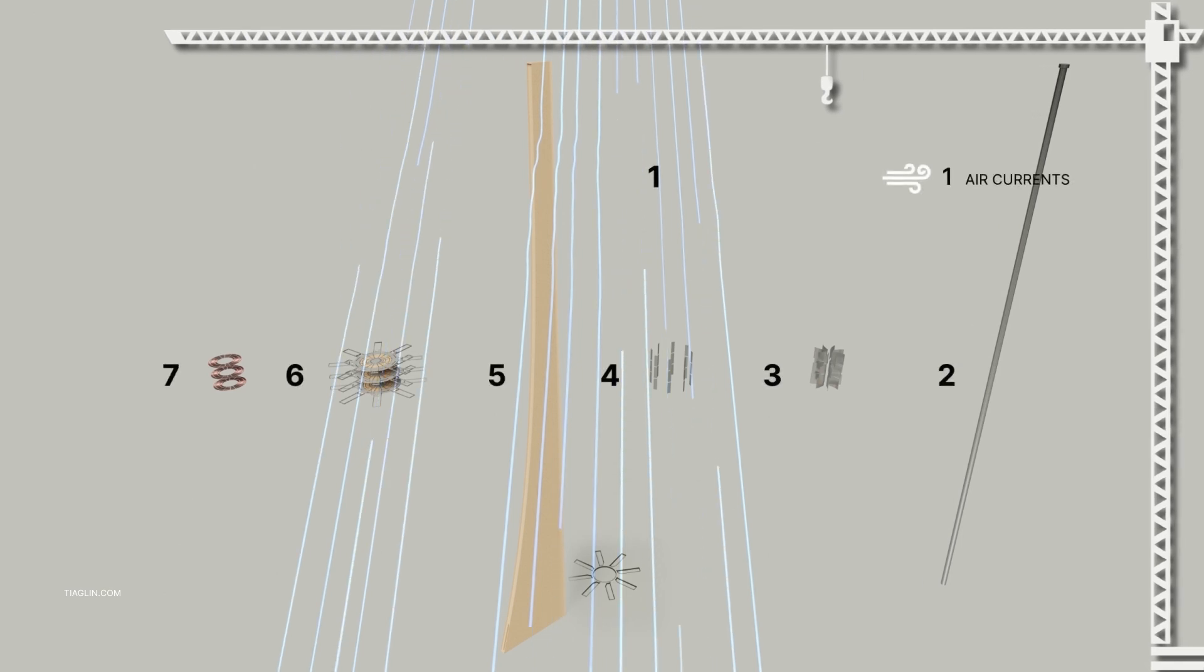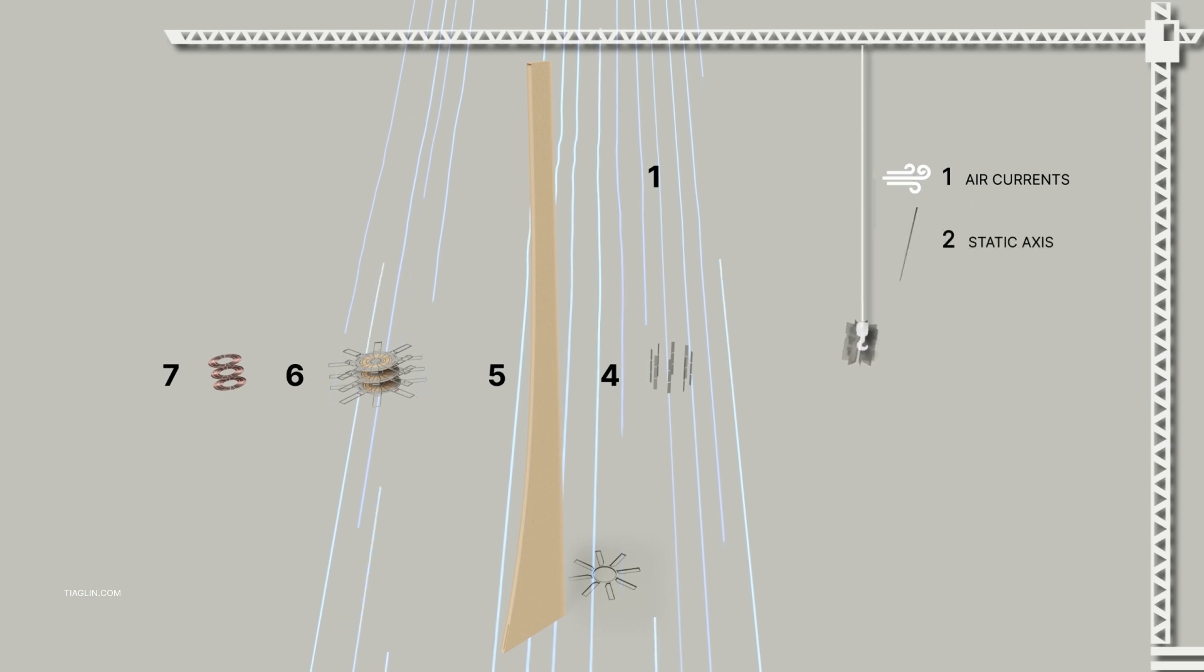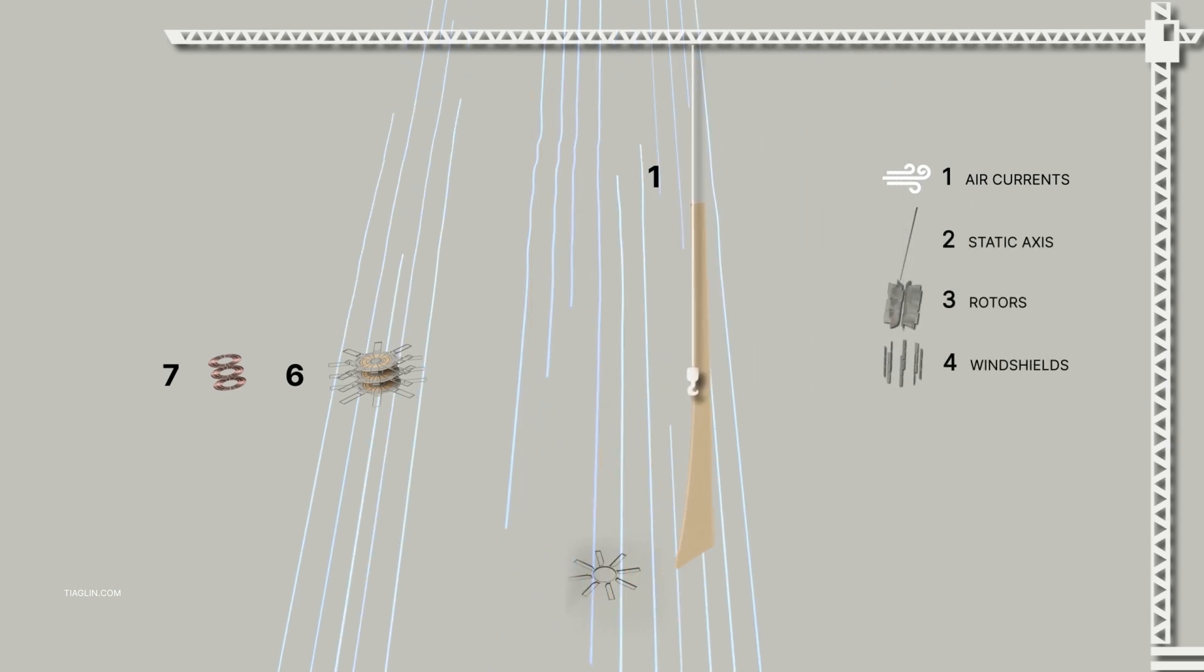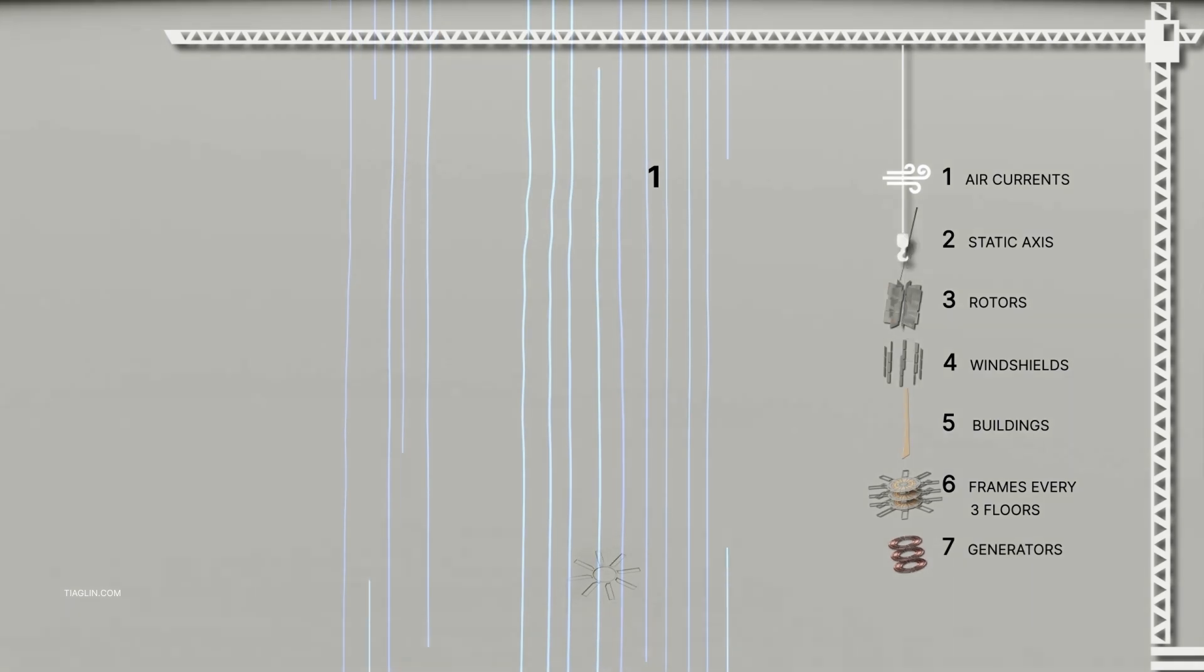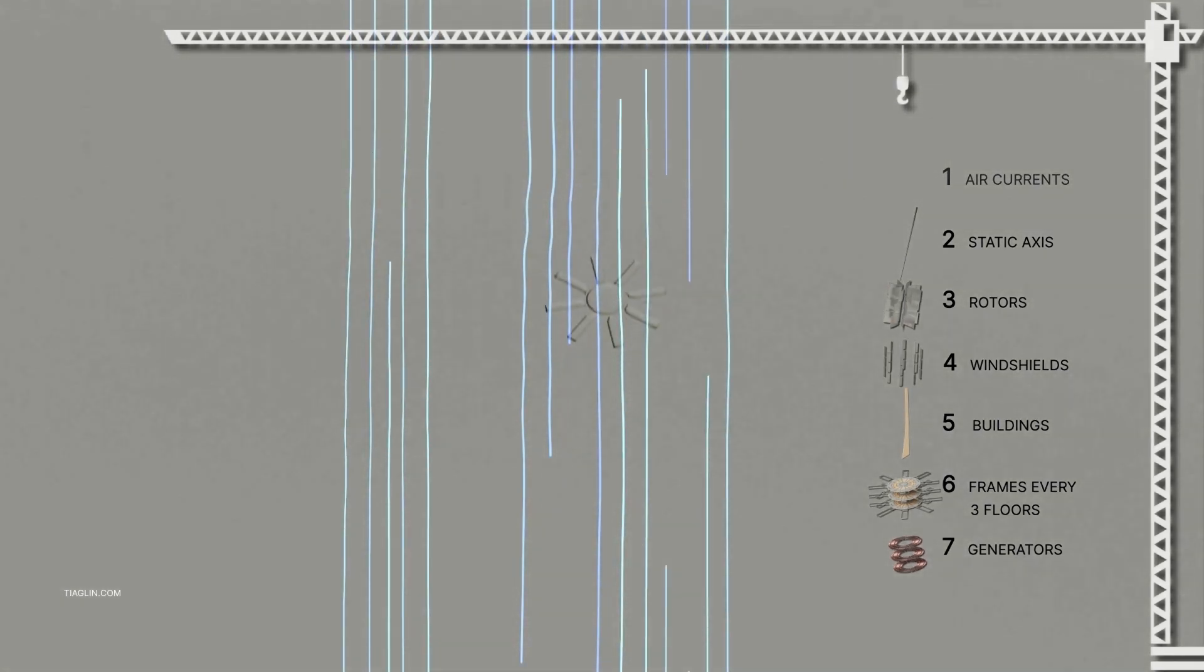Components: 1. Air currents, 2. Static axis, 3. Rotors, 4. Aerodynamic shields, 5. Buildings, 6. Frame every 3 floors, 7. Generators.